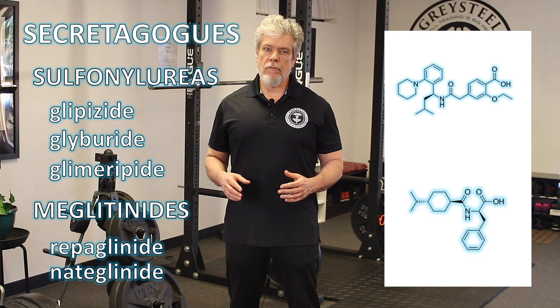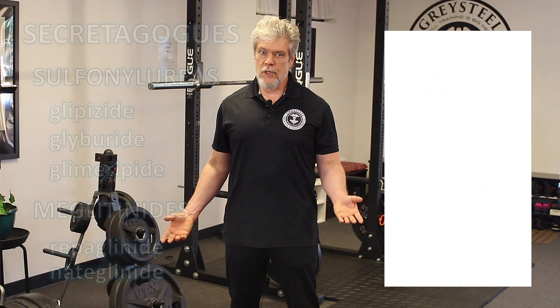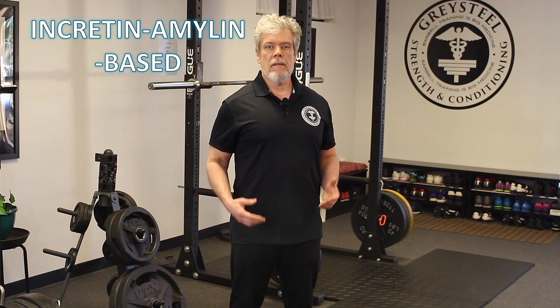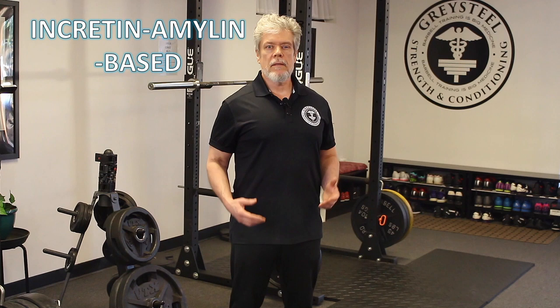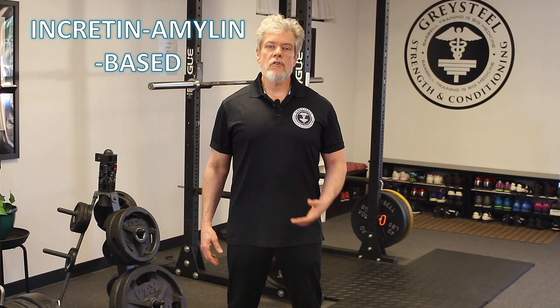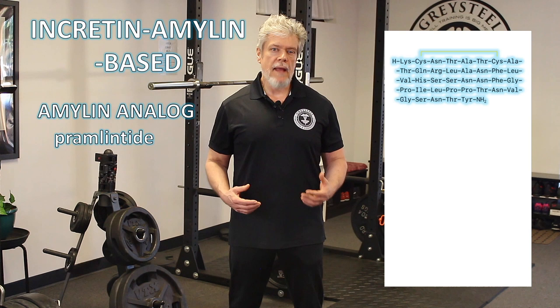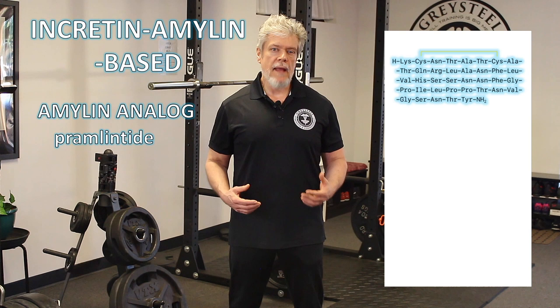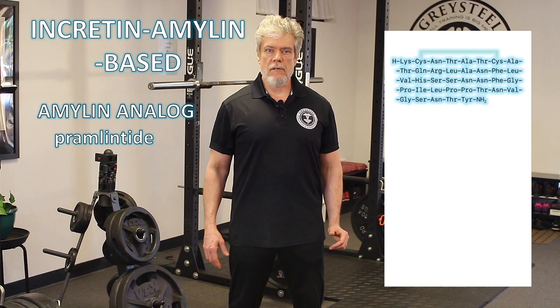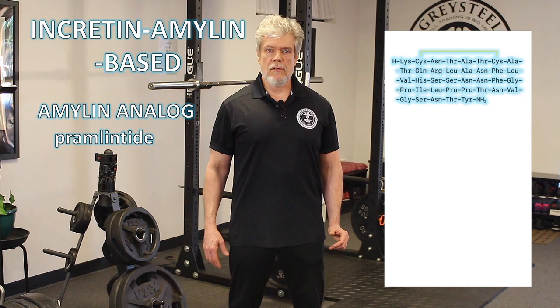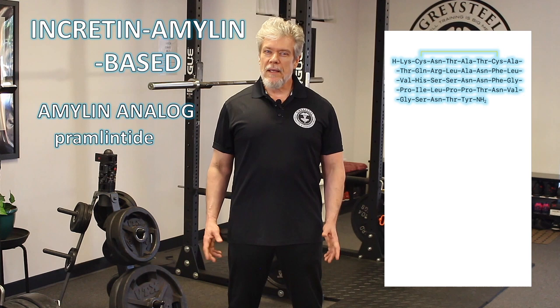Now we turn to the incretin/amylin-based therapies. Amylin, like insulin, is a peptide secreted by the beta cells of the pancreas when we eat. It helps stop glucose production in the liver, slows stomach emptying, and makes you feel full so you eat less. An injectable synthetic peptide called pramlintide is an amylin analog with the same effects. It can decrease the need for insulin in patients with advanced type 2 diabetes and promotes modest weight loss. Downsides include nausea, vomiting, and the fact that as a peptide it must be injected rather than taken orally.